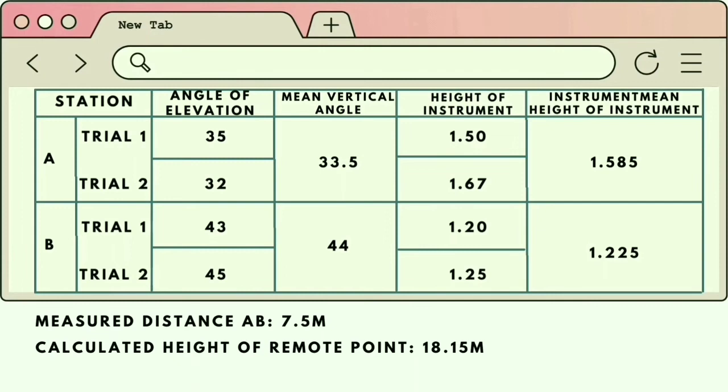To get the mean vertical angle of the two trials in each station, divide by 2. In Station A: 35 plus 32 divided by 2 equals 33.5. In Station B: 43 plus 45 divided by 2 equals 44.